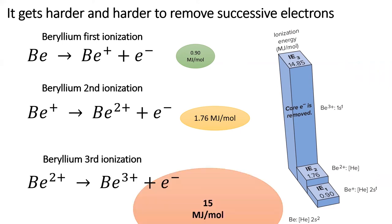However, beryllium's third ionization energy is colossally larger than the previous two at 15 megajoules per mole. While some of this is due to the difficulty of pulling a negative charge away from a 3 plus charge, a better explanation involves beryllium's place in group two on the periodic table.